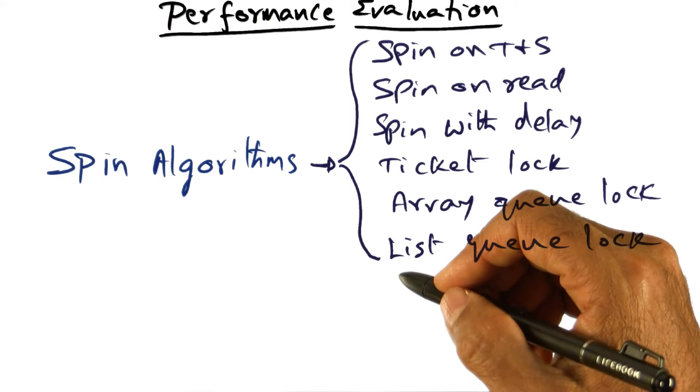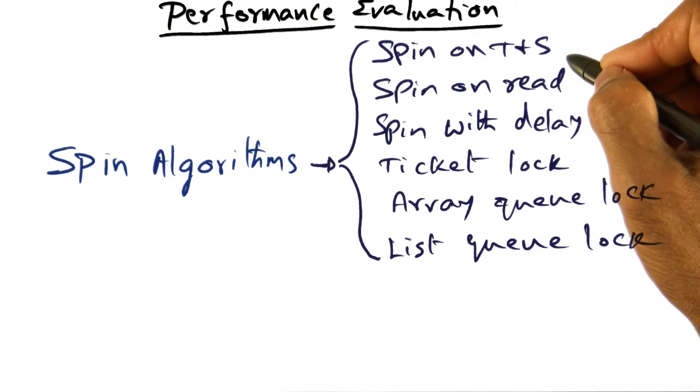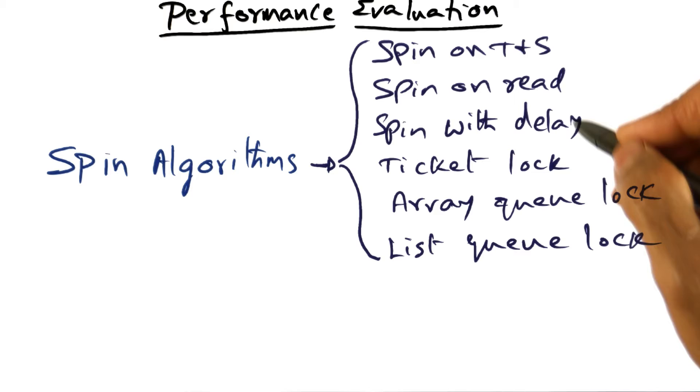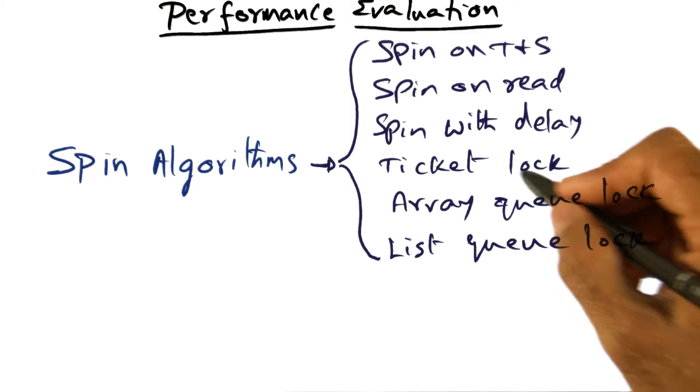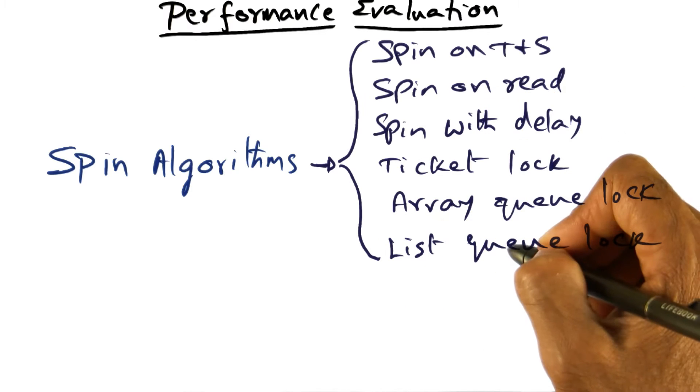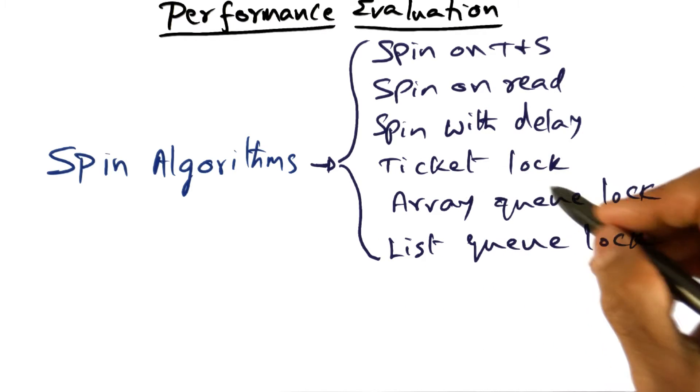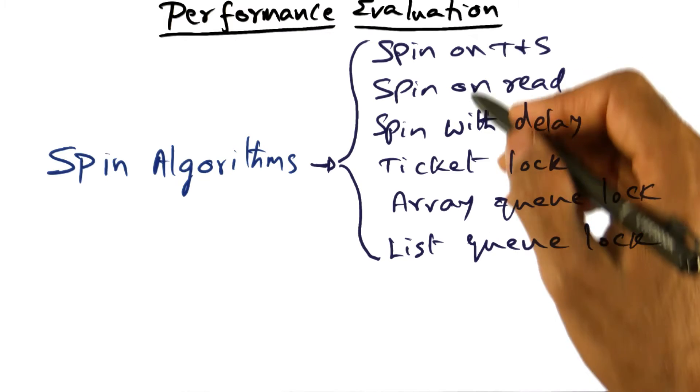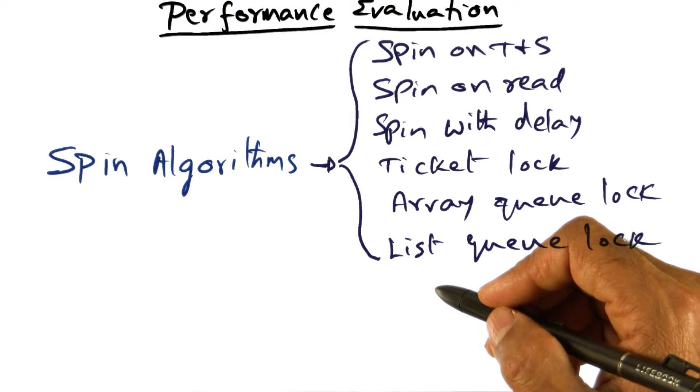We looked at a whole lot of spin algorithms from a very simple spin on test and set to spin with delay, and spin algorithms that respect the order of arrival or fairness, starting from ticket lock and the queue-based locks. All of these are different kinds of spin algorithms that we looked at.